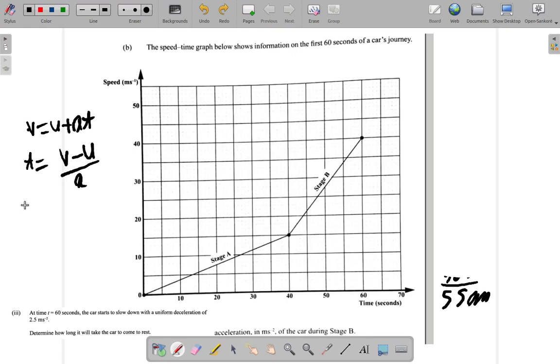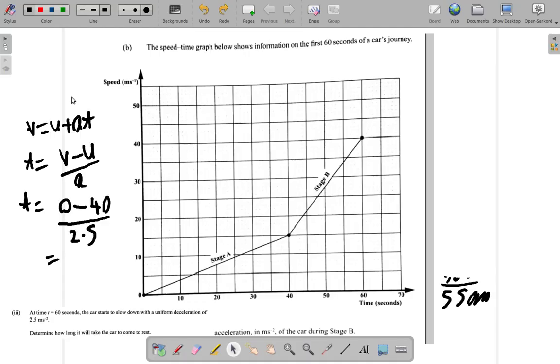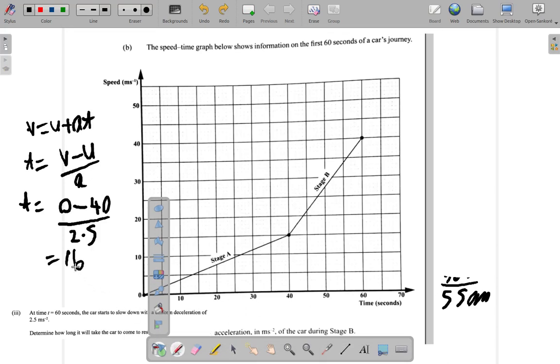So the time here it would take, it says it slows down until it comes to rest. That's final velocity zero minus initial velocity of 40 meters per second over acceleration of 2.5, which is 40 over 2.5. 40 over 2.5 equals 16. So this is showing 16 seconds.